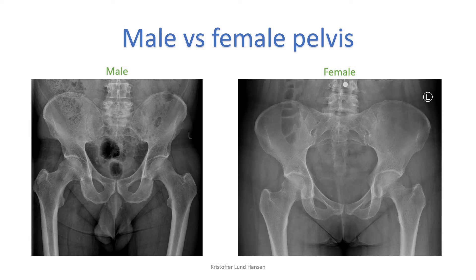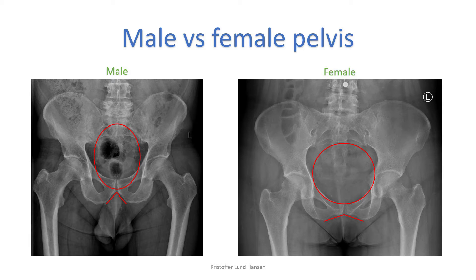Another useful thing to know is how to differentiate whether you have a male or female pelvis. The pubic arch in males has a much more narrow angle, while in females it's wider. The female pelvic inlet appears more round and wider, while the male one is more oval and narrow. Lastly, the iliac crest is wider and appears less flared in females compared to males.